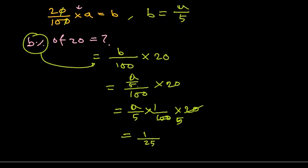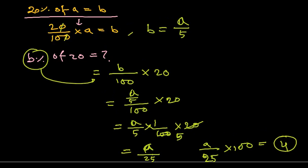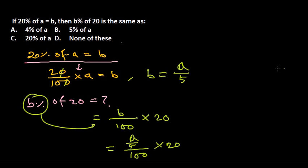Now what percent of A is that? So if 25 is there, what percent of A is that? We simply multiply by 100, and you know, 4. So the percentage here is 4, so the answer will be 4 percent of A, and option A is the correct one.